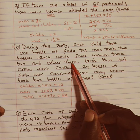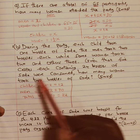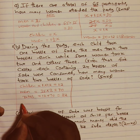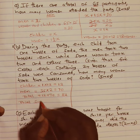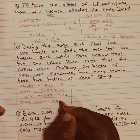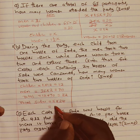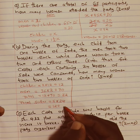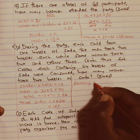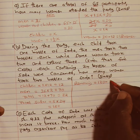Some women took 2 bottles and others took 3. Given that 5 crates each containing 24 bottles of soda were consumed, how many women took 2 bottles of soda? The total number of sodas is 5 crates times 24, giving us 120 sodas. The remaining sodas for women will be 120 minus 82, which gives us 38.